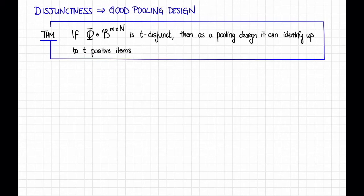Why do we care about disjunctness? Well, it turns out that a t-disjunct matrix yields a pooling design that can detect up to t positive items, or t sick people. More formally, here's a theorem. If the pooling matrix φ is t-disjunct, then as a pooling design, it can identify up to t positive items. Let's recall that this means that for any x of weight at most t, where x is a boolean vector of length n, then we can recover x given φ times x over the boolean algebra.